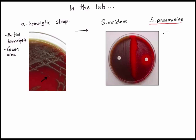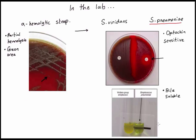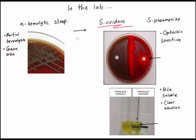In our last video we talked about Strep pneumoniae — it was optochin sensitive, and with bile it is bile soluble, giving a clear solution. Today's video is about Strep viridans. As you can see on the left where the pink arrow is, Strep viridans is optochin resistant — the bacteria grow right up to the optochin disc, so they're totally not sensitive to it.